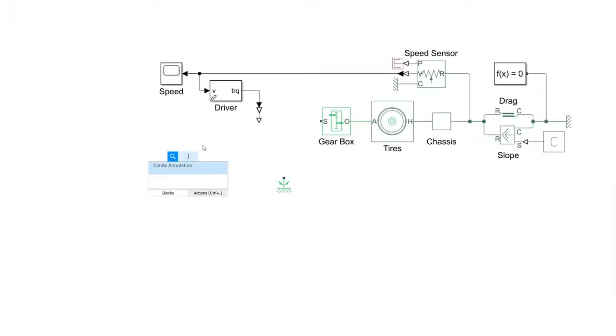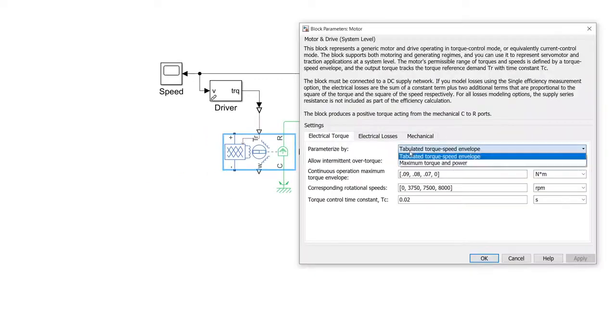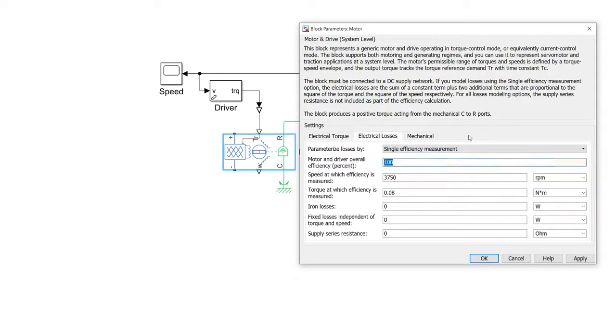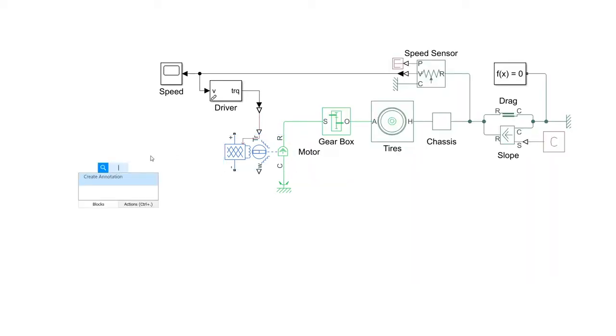Let's insert the motor and drive block by typing in the canvas. Then, set its torque, power, and efficiency from our motor's datasheet. For this short test, let's model the battery as a constant voltage source.